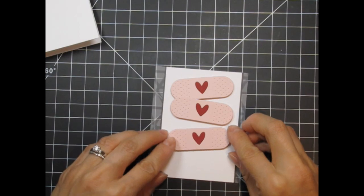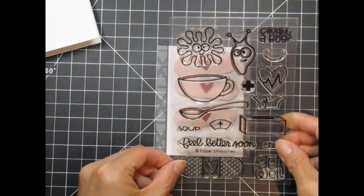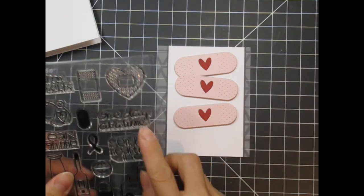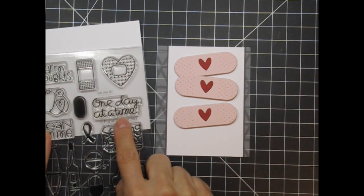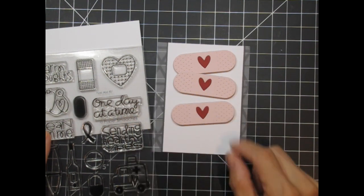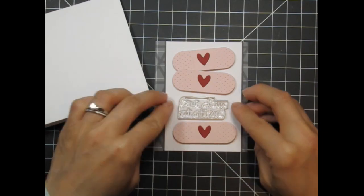I position them on the panel to determine their placement before choosing a sentiment. Feel Better Soon from Healthy Vibes is a little too long for the panel so I pull out first aid kit and pick one day at a time. Together with the band-aids this sentiment would work as a get well card, a sympathy card, and even for mending a broken heart.